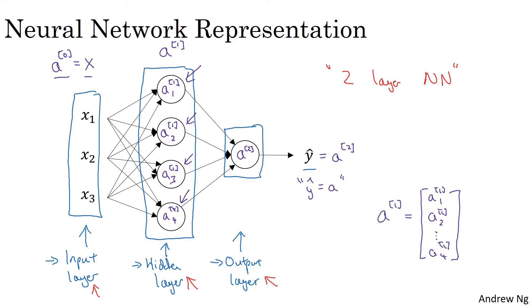Finally, something that we'll get to later is that the hidden layer and the output layers will have parameters associated with it. So the hidden layer will have associated with it parameters W and B. And I'm going to write superscript square bracket one to indicate that these are parameters associated with layer one or the hidden layer.